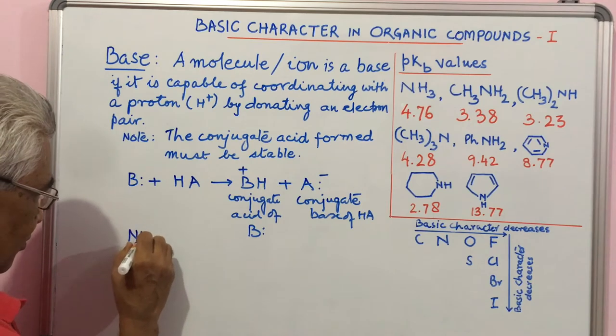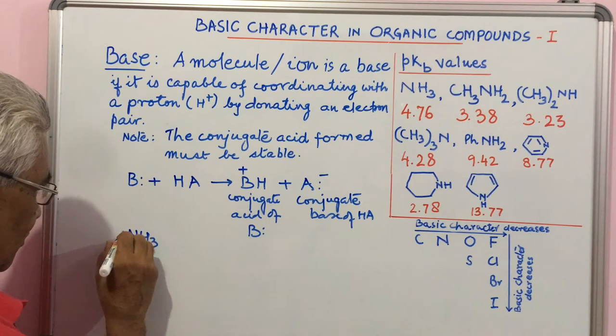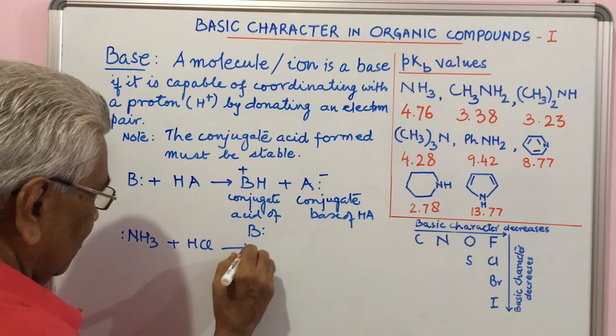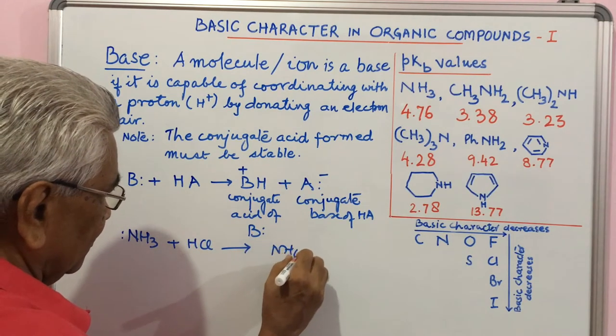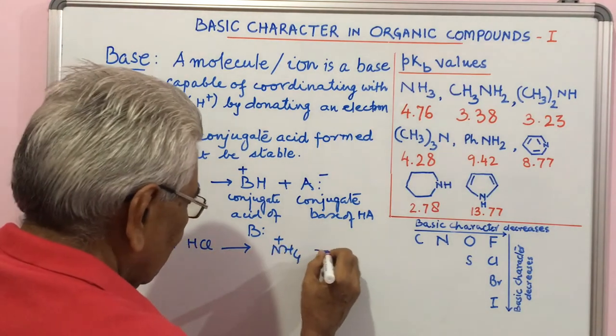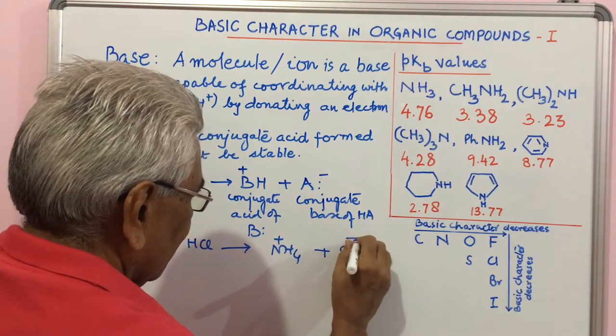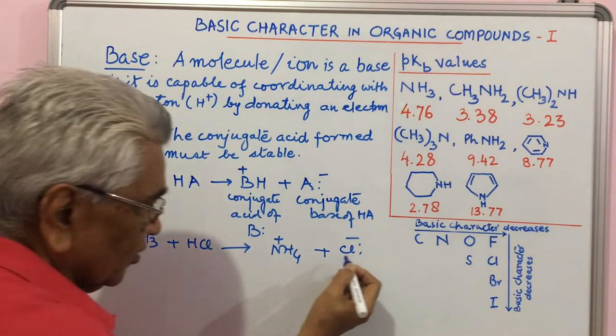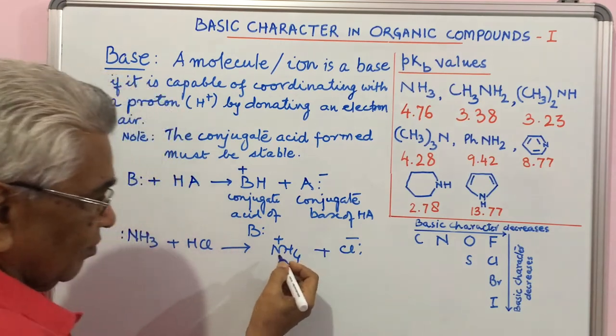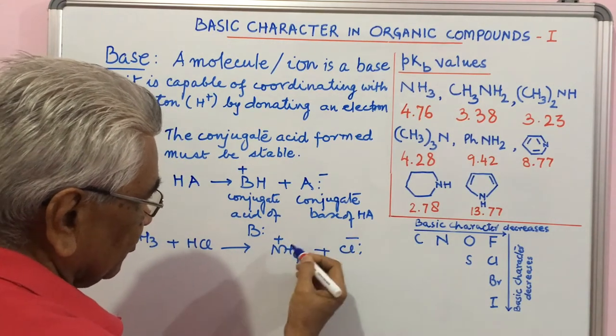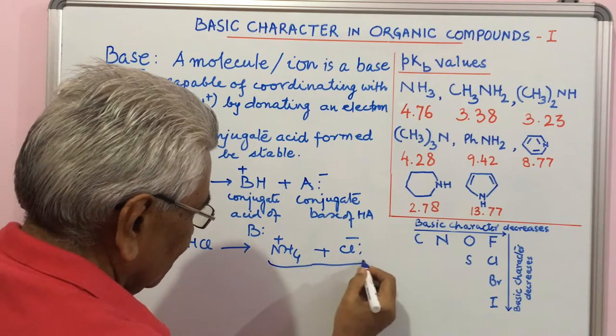If you take this example ammonia NH3 plus HCl, it forms NH4+ plus the conjugate base of HCl. NH4+ and Cl- are quite stabilized by attraction between plus and minus charges. So this is stabilized.